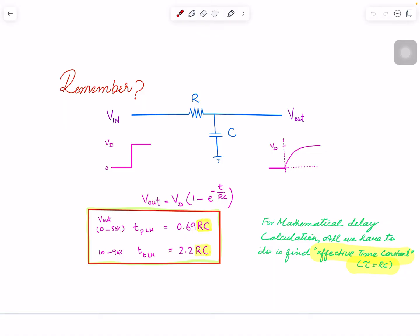V_out equals VDD - this is the highest voltage this node can get to - times (1 - e^(-t/RC)). This is time on the x-axis, and this RC is also called the time constant.